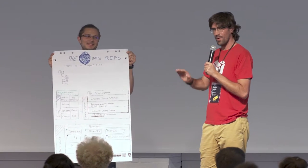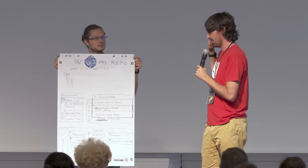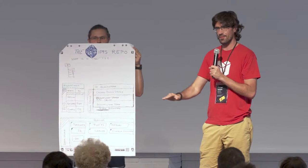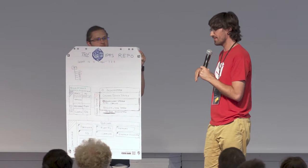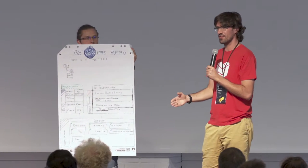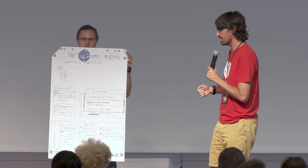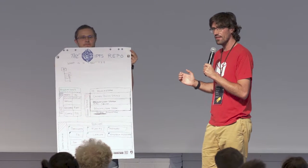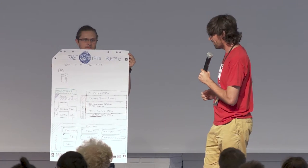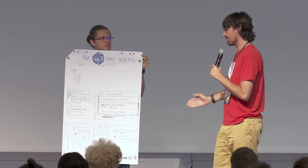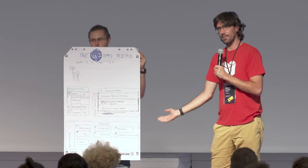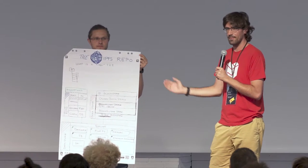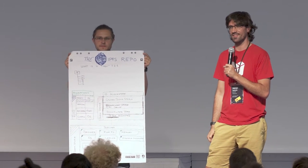Did you know that once all those layers are through and you just have the bare block store, you will still talk to a data store, and that data store is batched, so it won't be hitting the disk all the time, but rather try to batch all the things together and do a single write? And that data store can be implemented by a number of things like BadgerDB, like FlatFS, or it can be in memory?